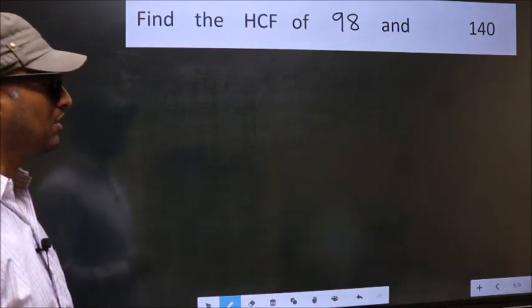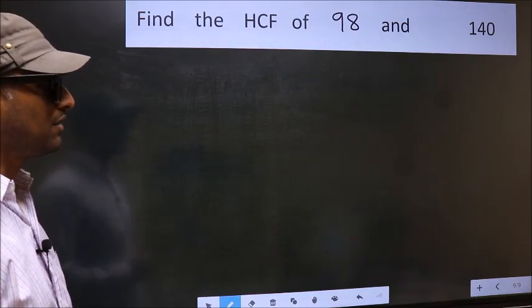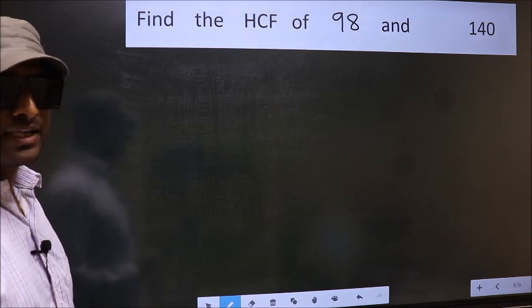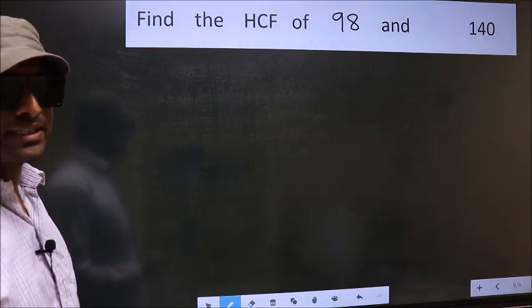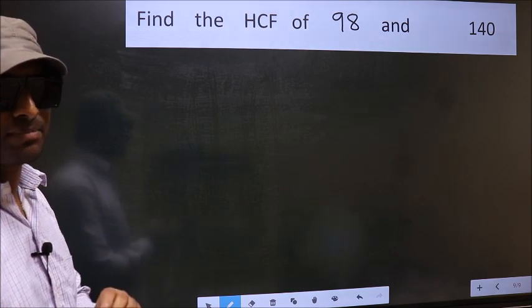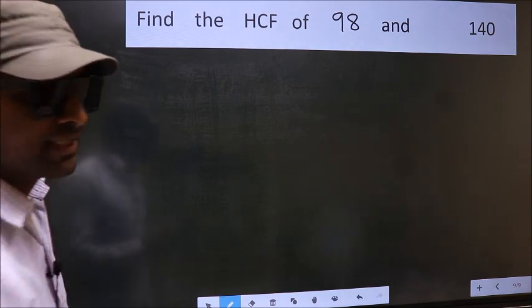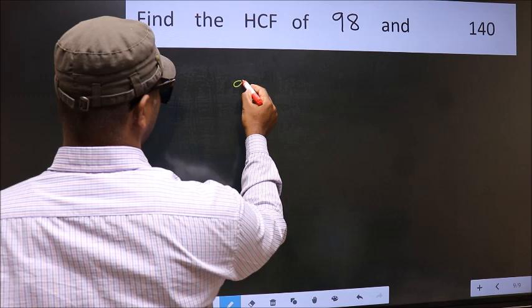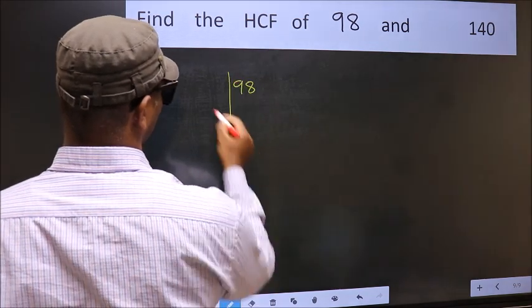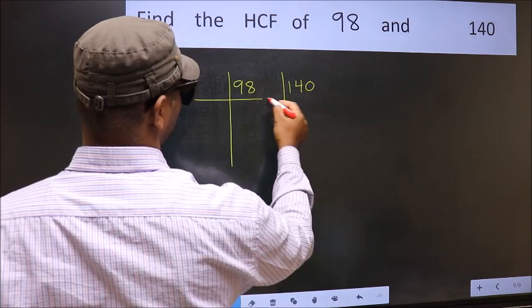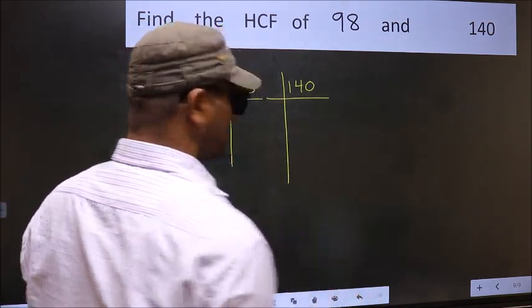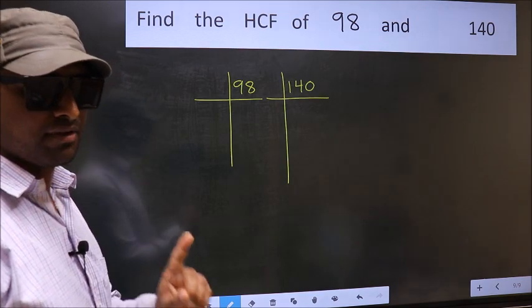Find the HCF of 98 and 140. To find the HCF, we should do the prime factorization of each number separately. What I mean is 98 and 140. This is your step 1.